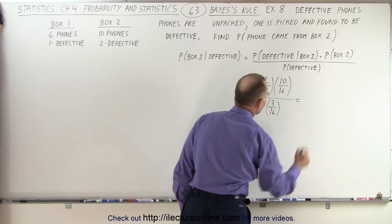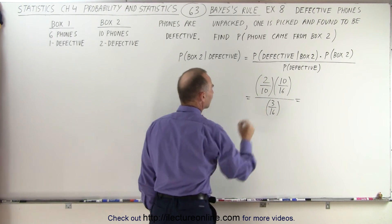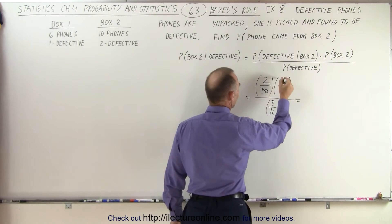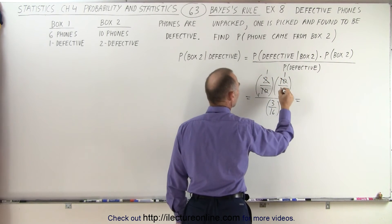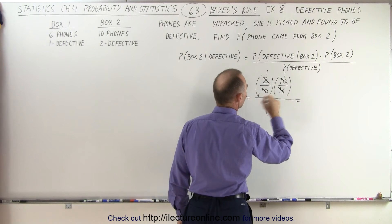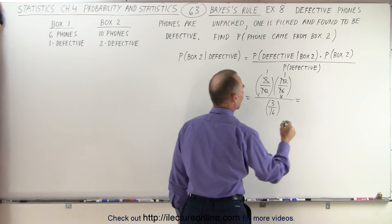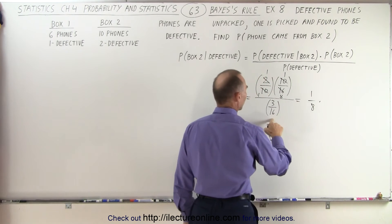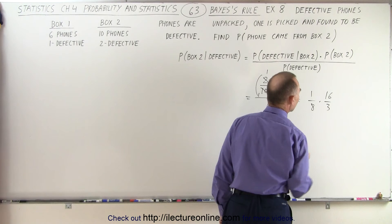Let's see what that equals. First of all, the tens cancel — that's one and one. The two becomes one. The sixteen becomes eight. So this is equal to one-eighth times the inverse of three over sixteen, which is sixteen divided by three.